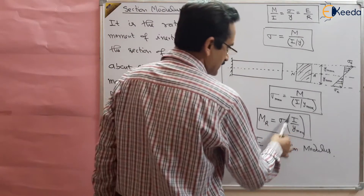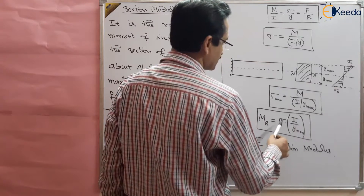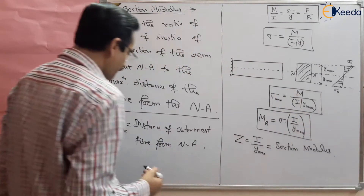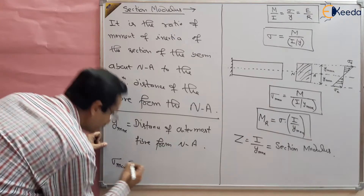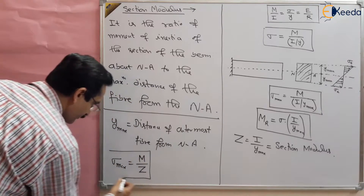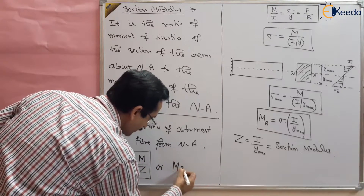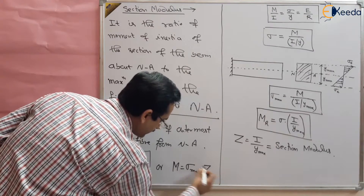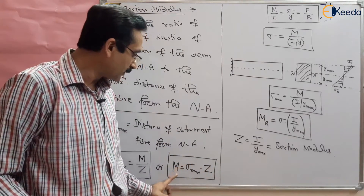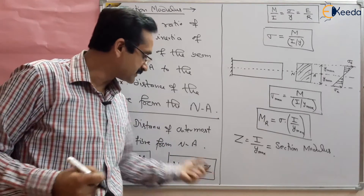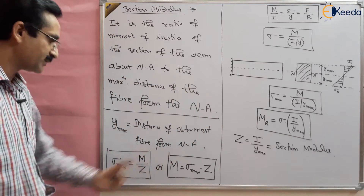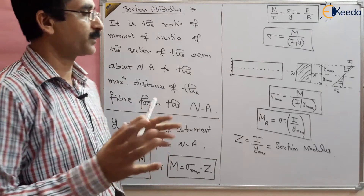So the moment of resistance is I by y_max and Z equals I by y_max. Therefore sigma_max equals M by Z, and equivalently M equals sigma_max multiplied by Z. This formula should be remembered. The moment of resistance depends on the section modulus: the higher Z is, the higher the resisting power. This is the section modulus.